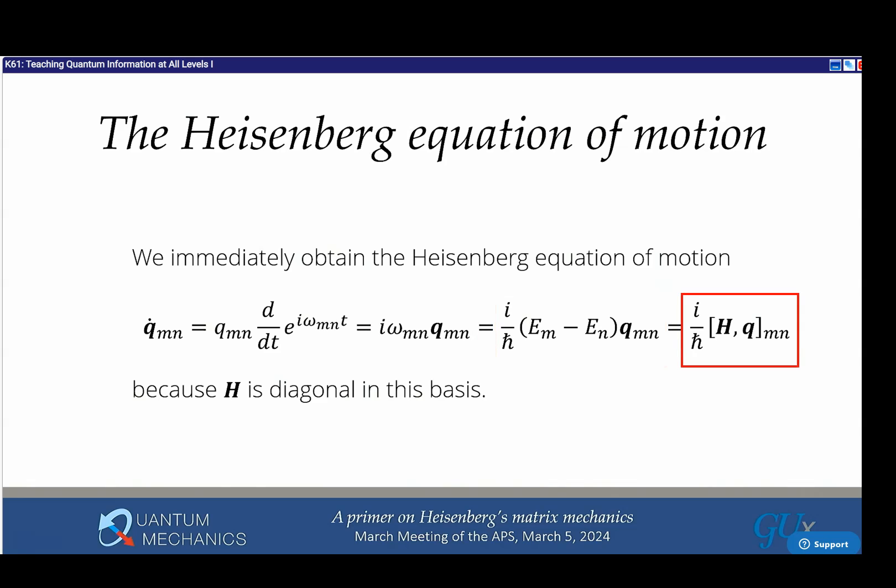The Hamiltonian is diagonal and time independent in this representation. The diagonal elements are E_1, E_2, E_3, etc. So (E_m - E_n) times q_mn is just the product of H times q minus q times H. By enforcing the classical equation of motion you get the Heisenberg equation of motion for the matrices.